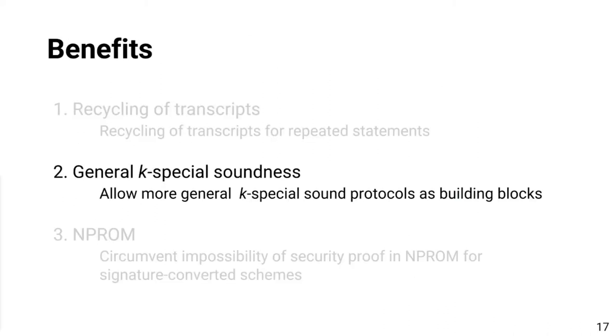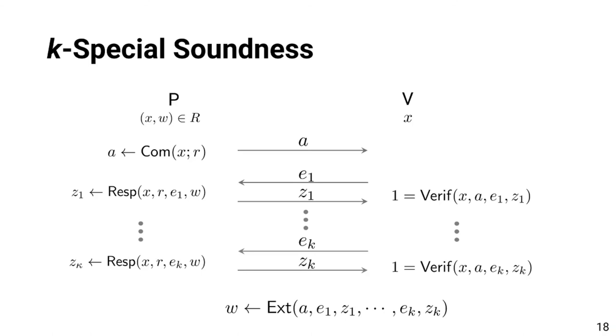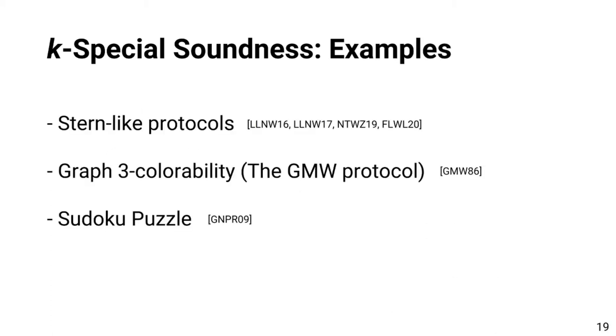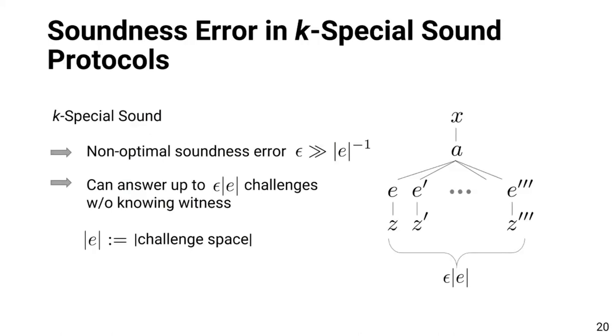Let me move to the second point where we explain about generalized special soundness. Observe that the original two special soundness can be naturally extended to k special soundness where given k valid transcripts with respect to the same first message and distinct challenges, the extractor successfully outputs a witness. There are several interesting protocols that fall into this category. In particular, star-like protocols are known to be three special sound and used in many lattice-based and code-based constructions. To explain how the original CDS falls short with k special sound protocols, we first recall that k special sound protocols can have large soundness error. It means that it might be possible to answer to multiple challenges without knowing the witness.